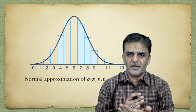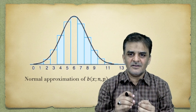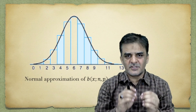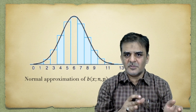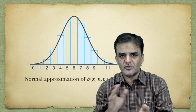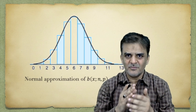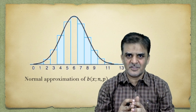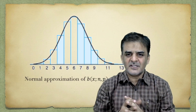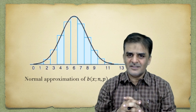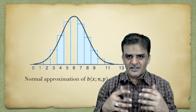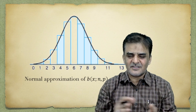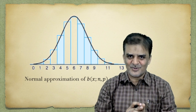This was an example where we applied normal distribution technique to find the cumulative probability up to a particular value of the random variable, approximating the binomial distribution towards the normal distribution — normal approximation to binomial distribution. In the coming lectures we will learn about sampling distributions and their applications. Till then, goodbye and thank you.